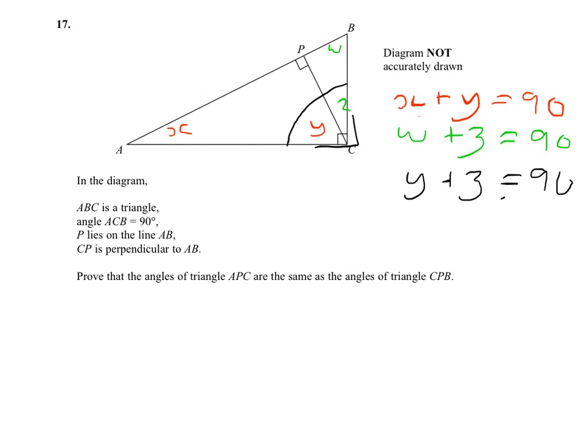Now, if Y plus Z equals 90 and W plus Z equals 90, then this means that these two are the same. So W equals Z, so W equals Y.